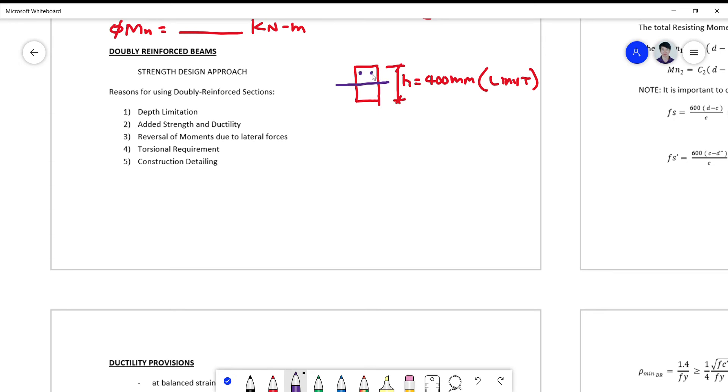So the number two reason is I'm adding actually more strength and ductility, because if I add the reinforcement in compression, I'm giving also an additional value on the compression couple, letter C.